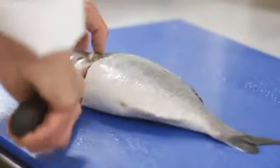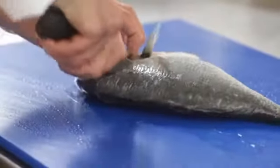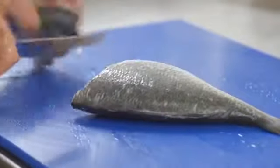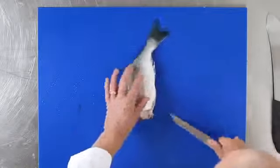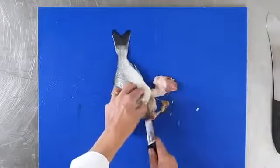With a knife, go round the collar of the fish on the first side, turn the fish over and repeat the process. From tail to head, release the belly, teasing out the guts with the tip of the knife.